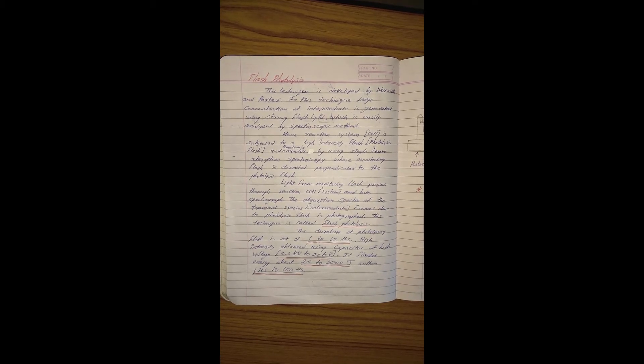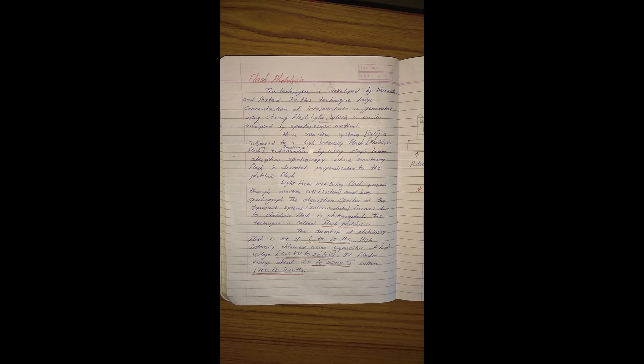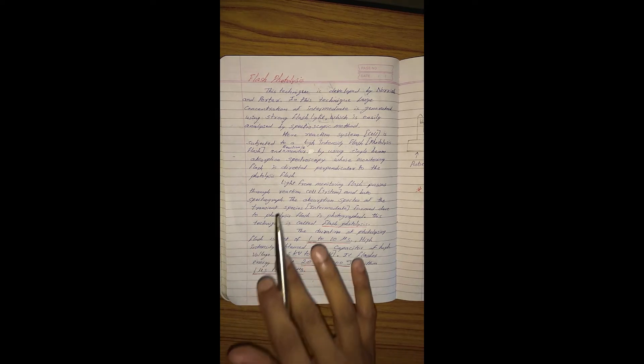Today we are going to learn the flash photolysis technique, which we can use in studies of photochemical processes. In photochemical processes, there is a formation of intermediates like singlet and triplet. To understand the quantity of singlet and triplet generated, we can use the flash photolysis technique.